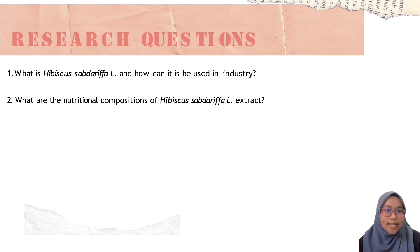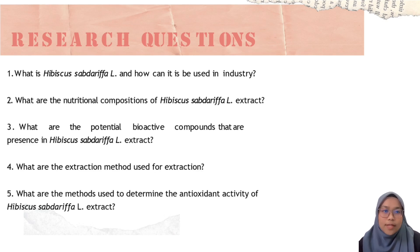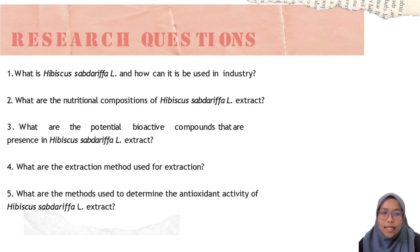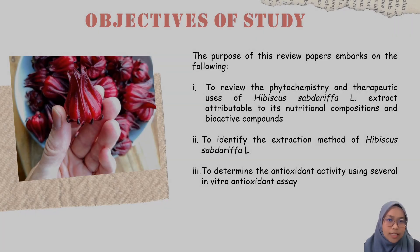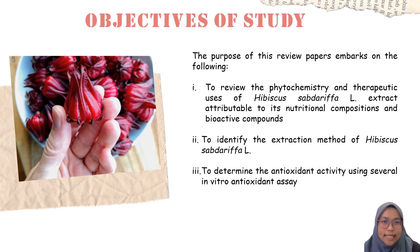There are 5 specifications: what is Hibiscus sabdariffa and how it can be used in industry; what are the nutritional compositions of Hibiscus sabdariffa L extract; what are the potential bioactive compounds present in Hibiscus sabdariffa L extract; what are the extraction methods used; and what are the methods to determine the antioxidant activity of Hibiscus sabdariffa L extract. The objectives of the study are to review the phytochemistry and therapeutic uses of Hibiscus sabdariffa L extract attributable to its nutritional composition and bioactive compounds; to identify the extraction method of Hibiscus sabdariffa L; and to determine the antioxidant activity using several in vitro antioxidant assays.